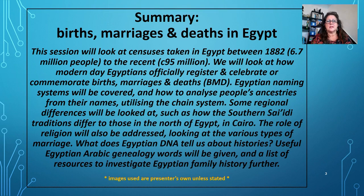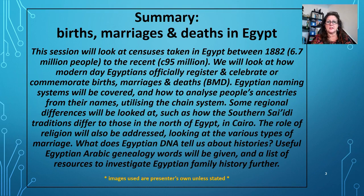This session will look at censuses between 1882 and present, and how modern day Egyptians officially register and celebrate or commemorate births, marriages and deaths. Egyptian naming systems will be covered, and how to analyse people's ancestries from their names utilising the chain system. Some regional differences will be looked at, the role of religion, various types of marriage, what Egyptian DNA tells us about histories, useful Egyptian words, and a list of resources.